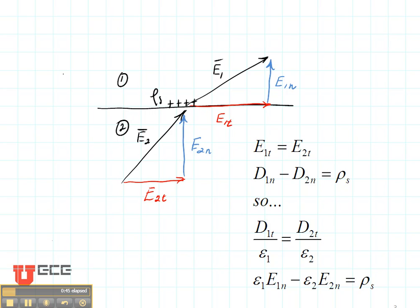Now as we said, the boundary conditions are used in order to find how the field in one region changes to a field in another region. Let's say for instance that we have region number one, which is air, and region number two, which is water.